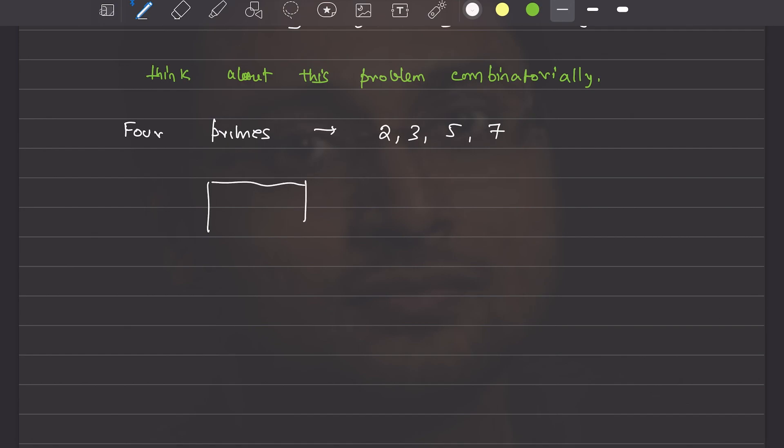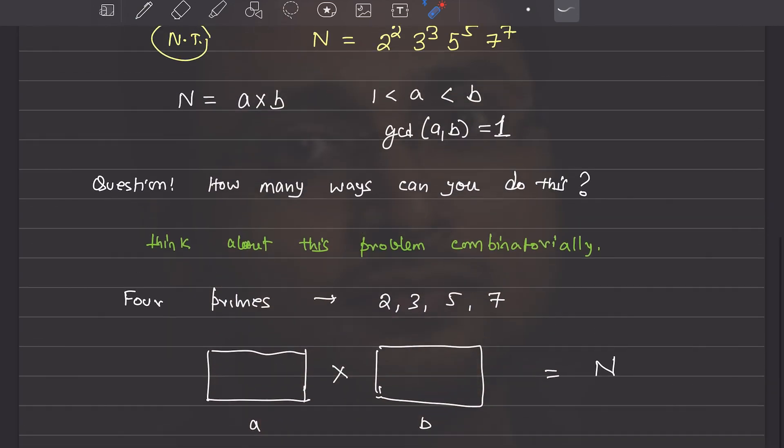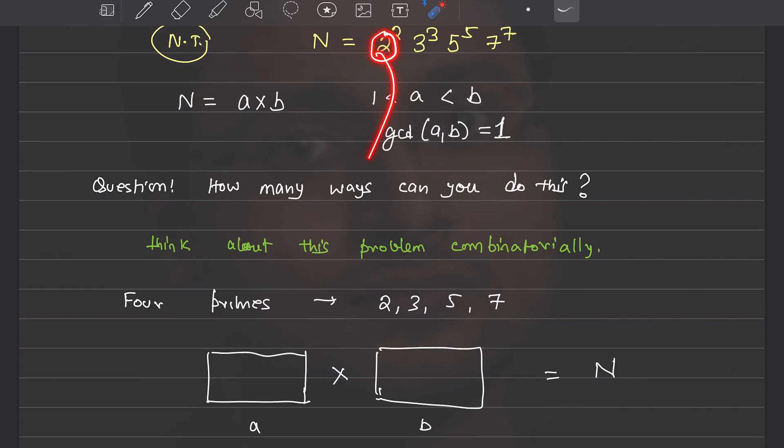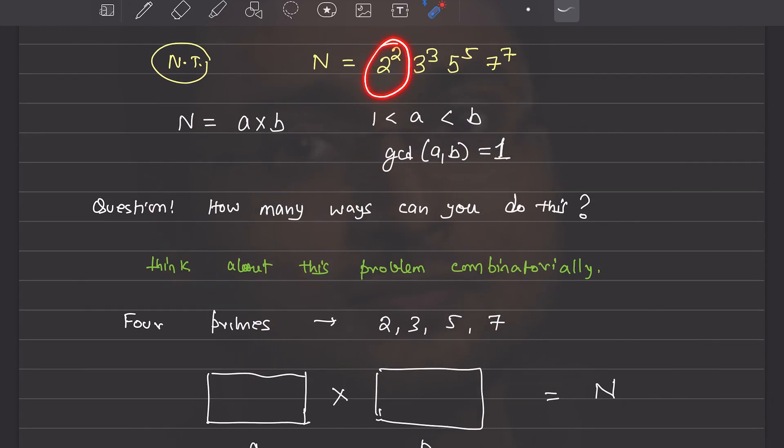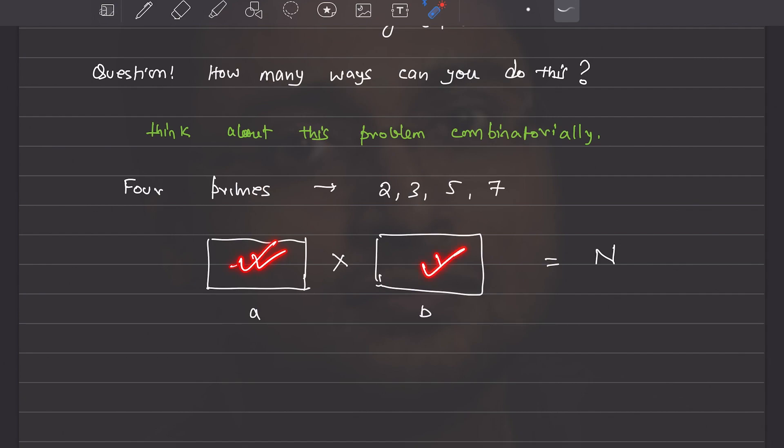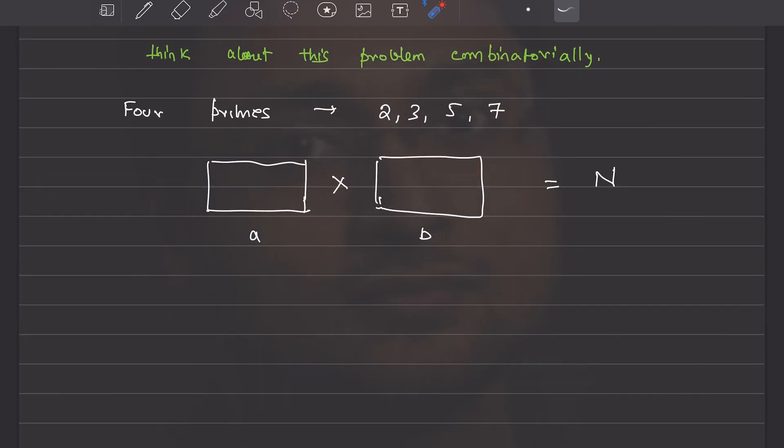I will think of the number a as one box and the number b as another box. So this is one number, this is another number, and their product is n, and the GCD of a and b is 1. What that means is, if I put a two in this particular box, I have to put all the twos in the same box, because I do not want anything to be in the intersection of these two boxes. It is very important that you think about this problem like this.